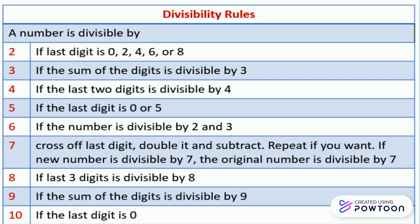For 7: cross out the last digit, double it, and subtract. Repeat if needed. If the new number is divisible by 7, then the original number is divisible by 7.